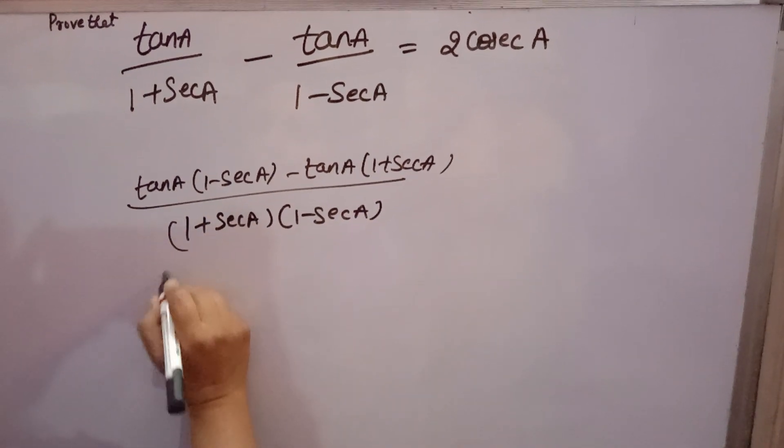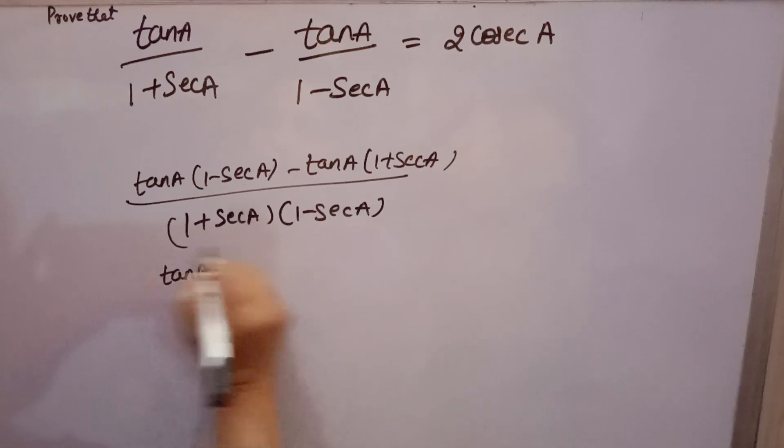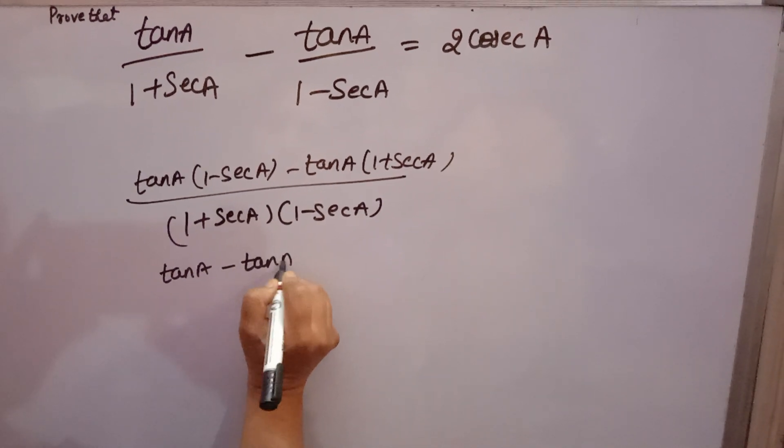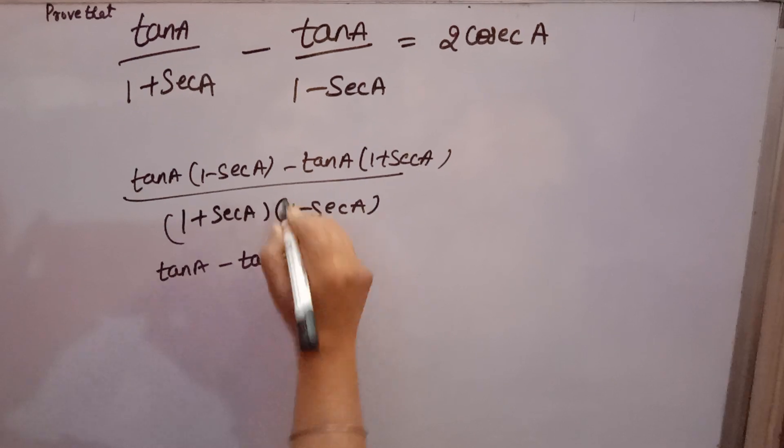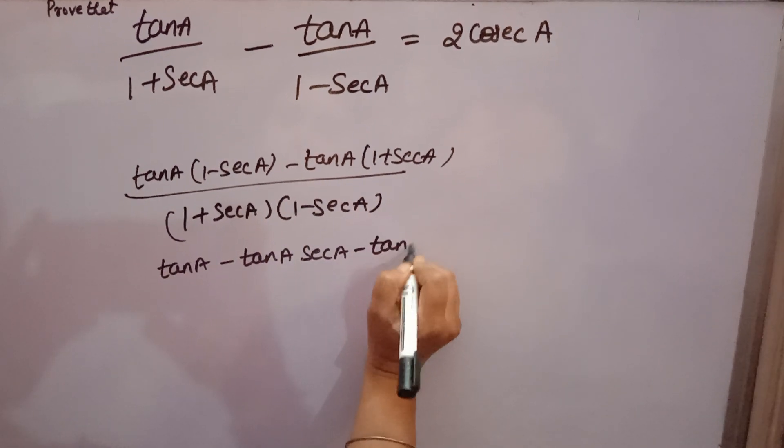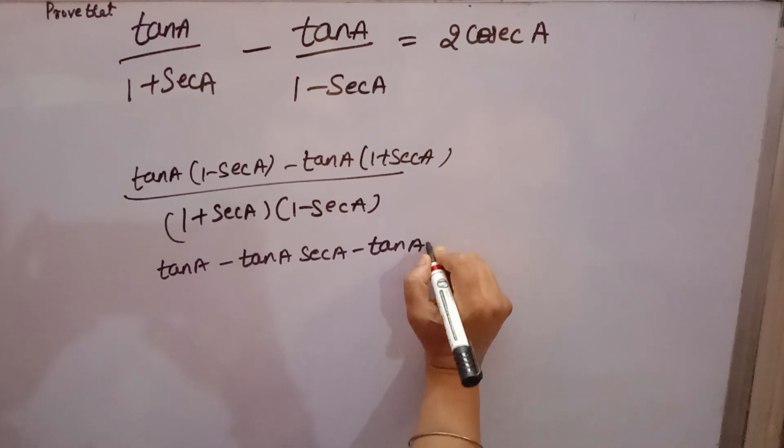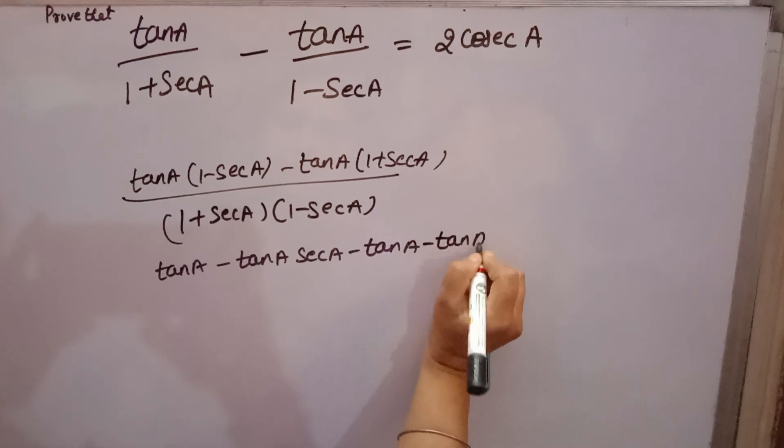Solve further. tan A into 1 minus sec A gives tan A minus tan A sec A. Again, minus tan A into 1 plus sec A gives minus tan A minus tan A sec A.